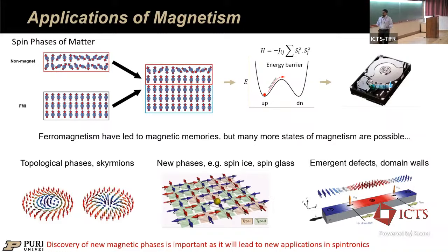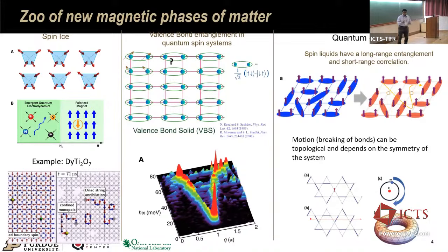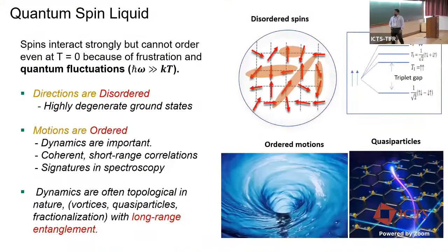But that's not the only state of matter. There are other phases of matter like skyrmion spin liquids and emergent defect domains — a huge play field that we can work with. For example, we can look at valence bond entangled systems like valence bond solids or resonant valence bond systems, and definitely quantum spin liquids, where we have very long-range quantum interactions from which you can get topological states.